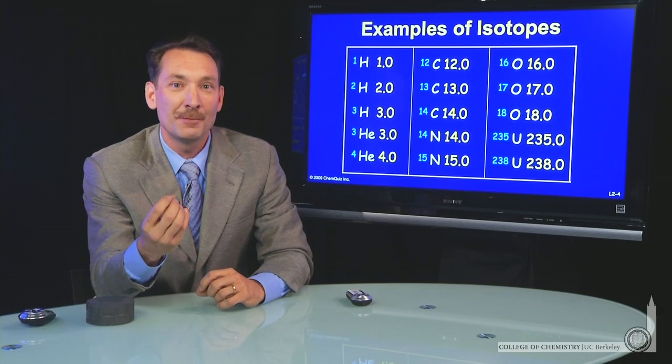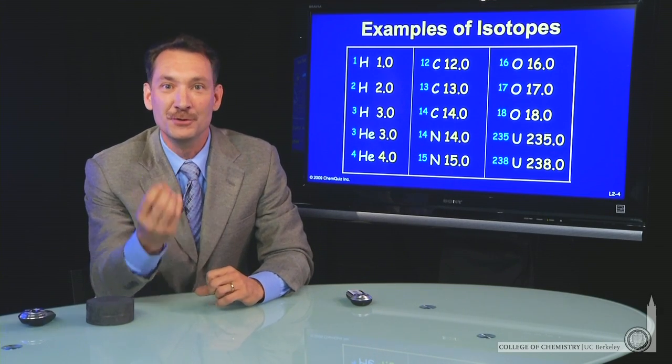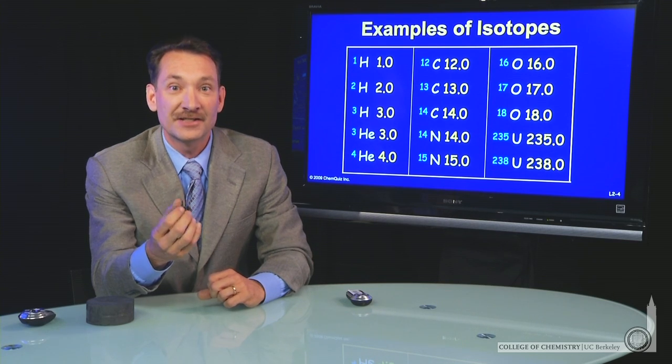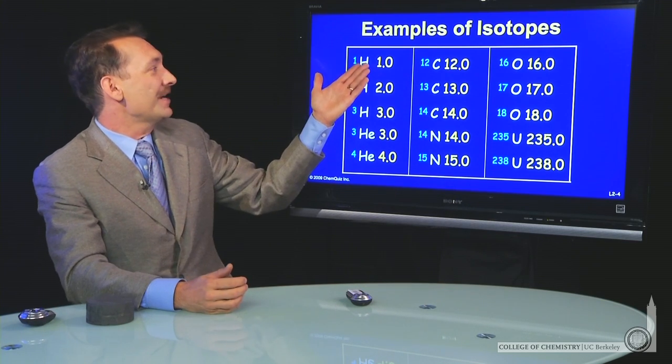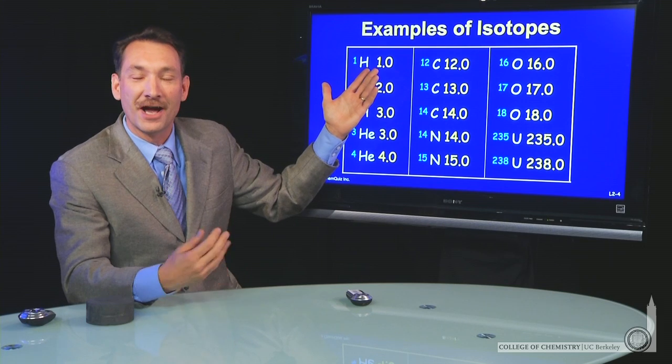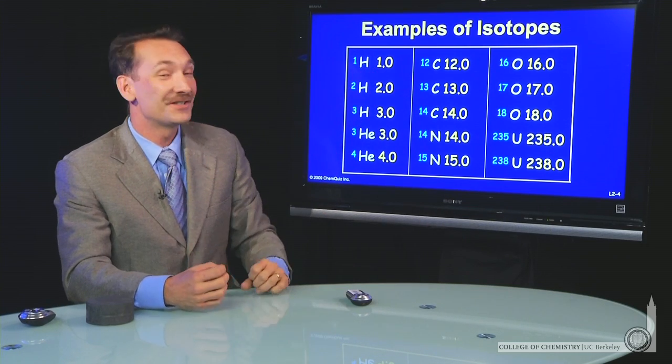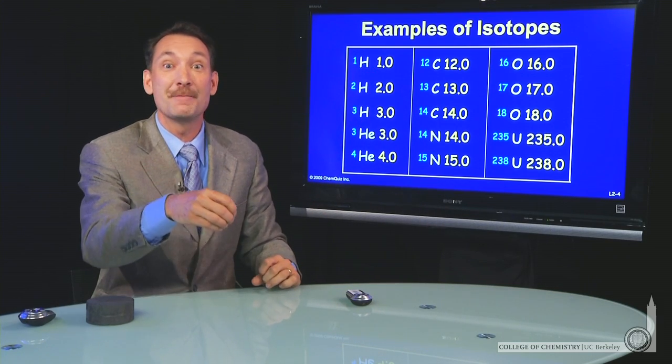Isotopes are elements with different numbers of neutrons. Let's look at a few. Hydrogen comes in several different flavors or isotopes. You can think of isotopes as a different flavor of the same element.